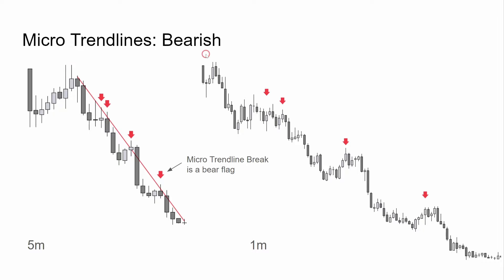Micro trend lines — bearish. The same thing goes for the bears. We have a good trend line, a couple of breaks here and here, a deeper pullback here, and smaller breaks here. These all led to profitable bear flags on the one-minute time frame. But again, we don't have to watch the one-minute time frame to understand that these wicks are creating bear flags on smaller time frames — they all lead to bear flags with double tops and bearish breakouts leading to profitable trades.